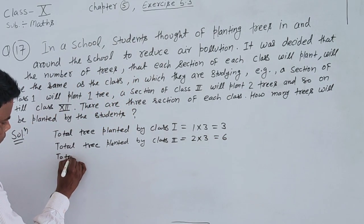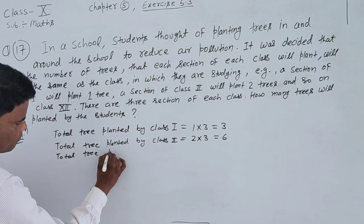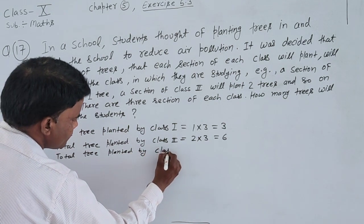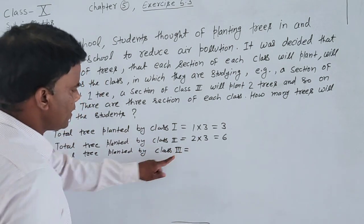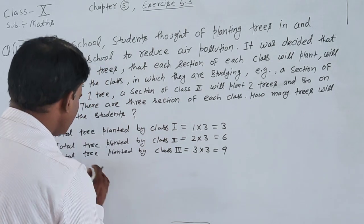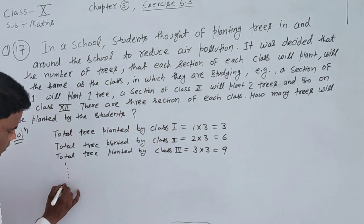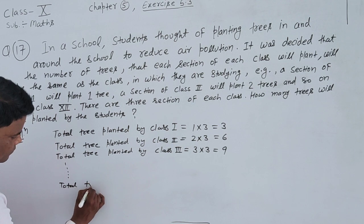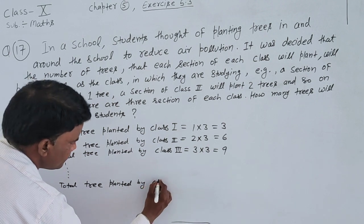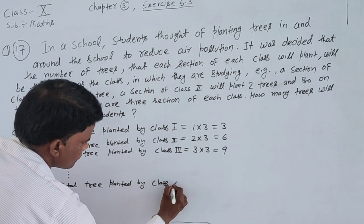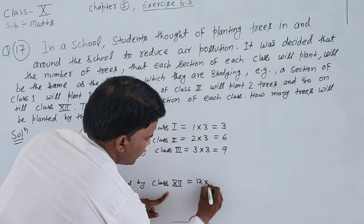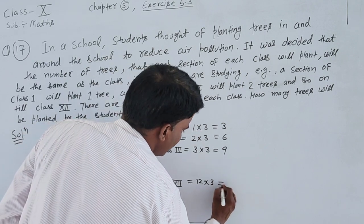Total trees planted by Class 3rd: Class 3 plants 3 trees per section, so 3 times 3 equals 9. Total trees planted by Class 12th: Class 12 plants 12 trees per section, so 12 times 3 equals 36.